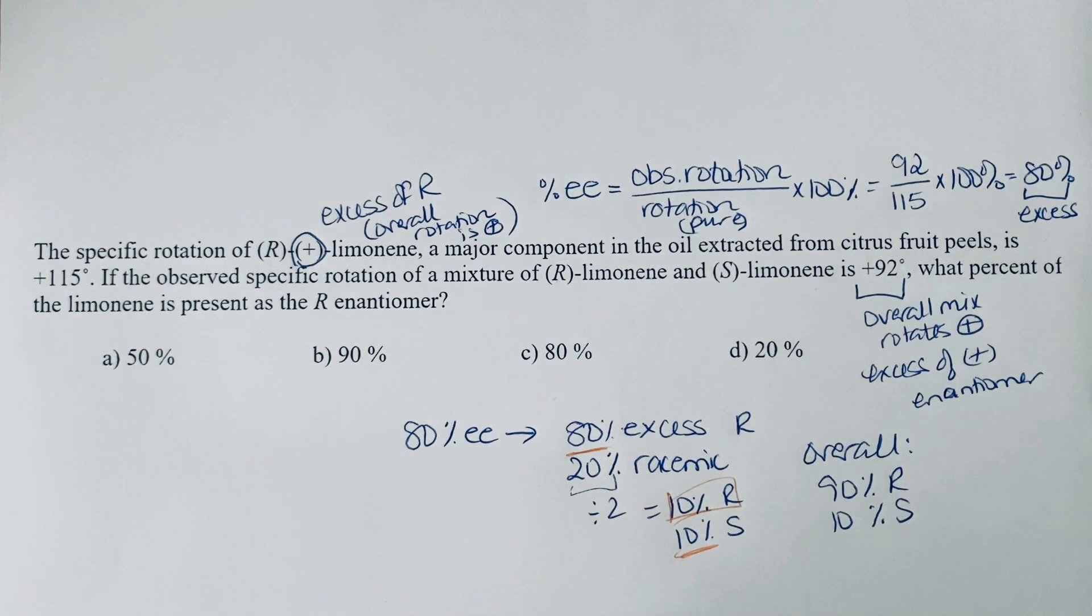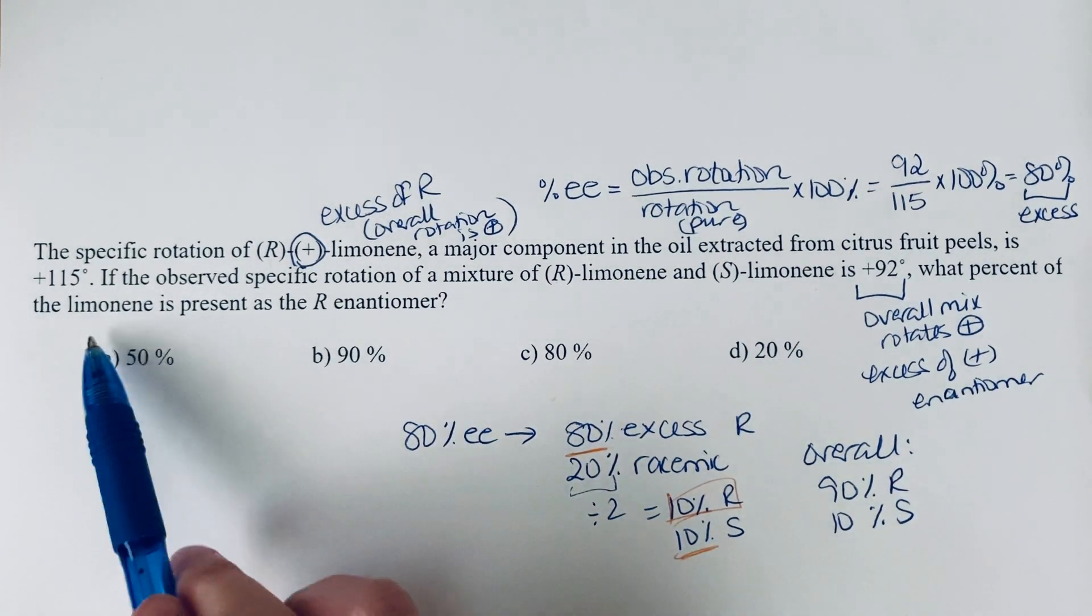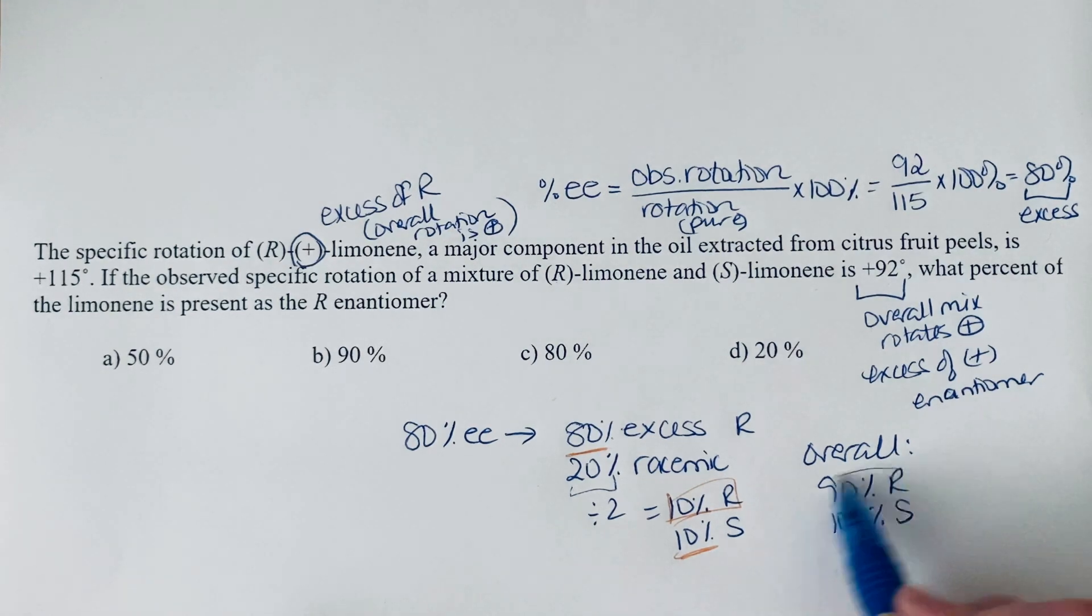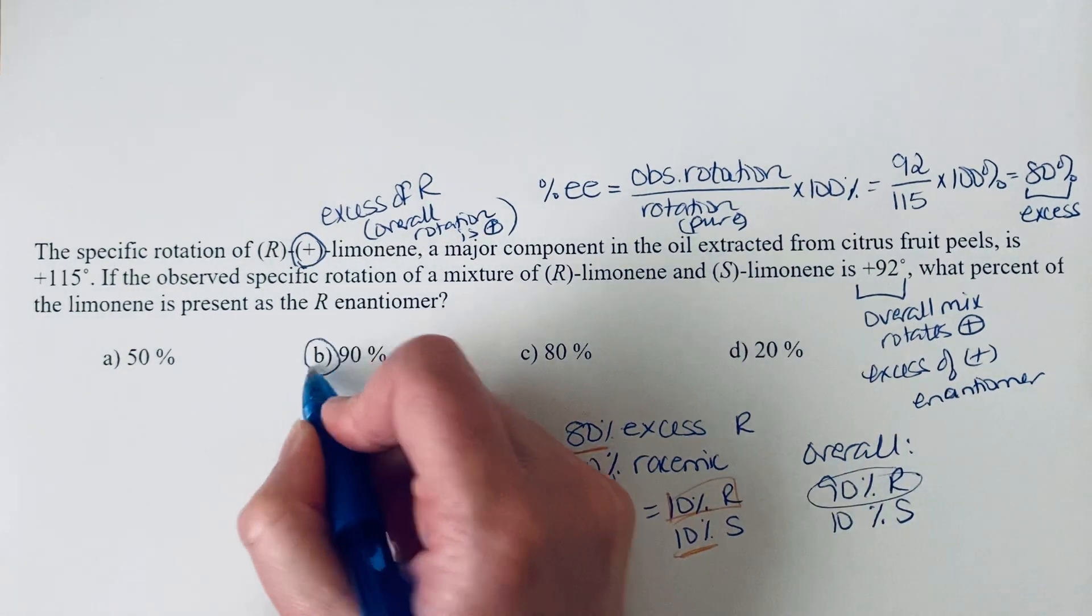So what are we being asked for? We're being asked what percent is present as the R enantiomer. So if I look down here, we've identified that as 90%. So that is option B.